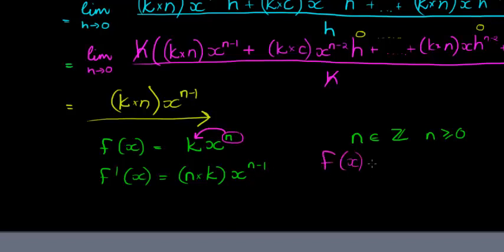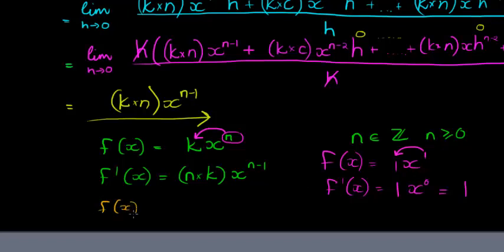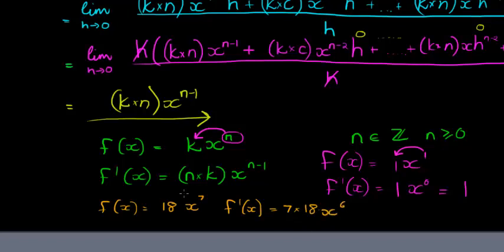Let's look at two brief examples. f(x) = x^1: multiply 1 with the coefficient 1, subtract 1 from the exponent to get x^0, which is just 1. For f(x) = 18x^7: the derivative is 7×18·x^6. We multiply the exponent with the coefficient and subtract 1 from the exponent.